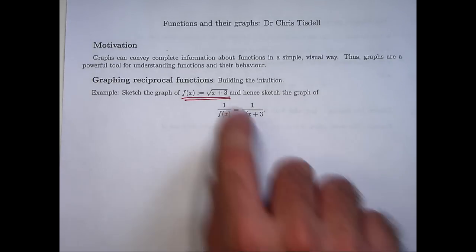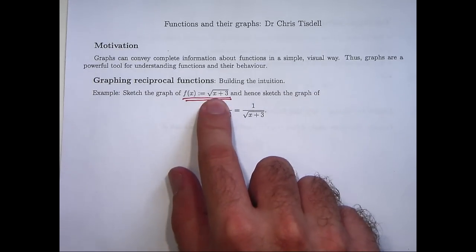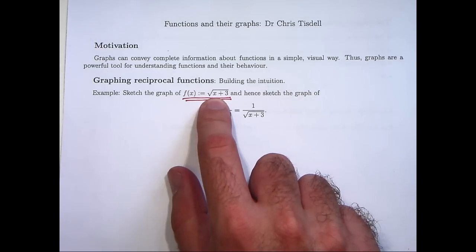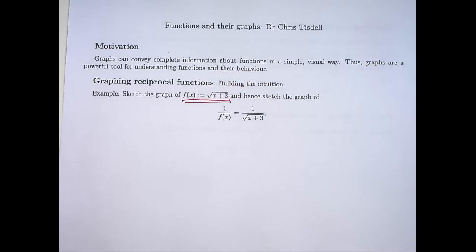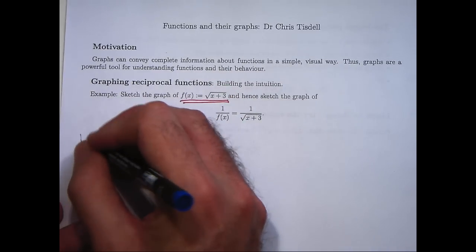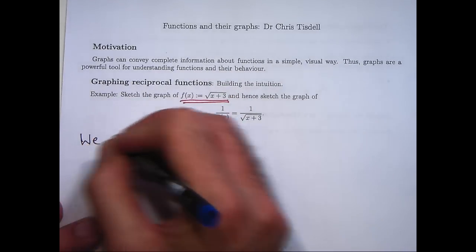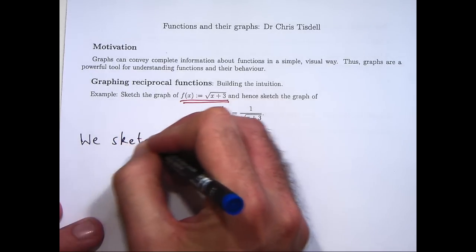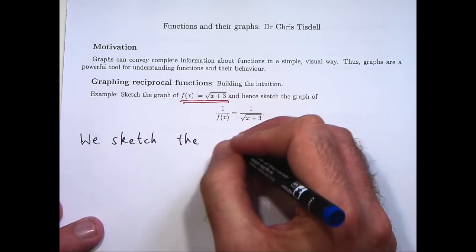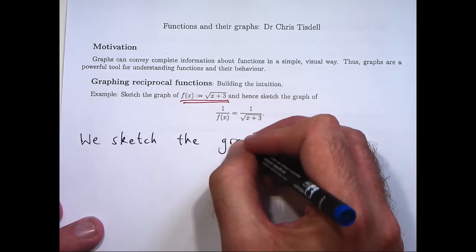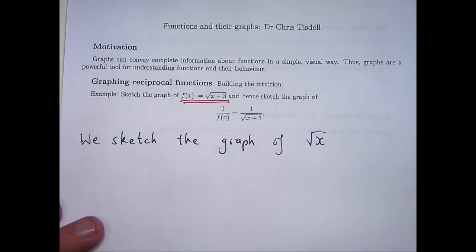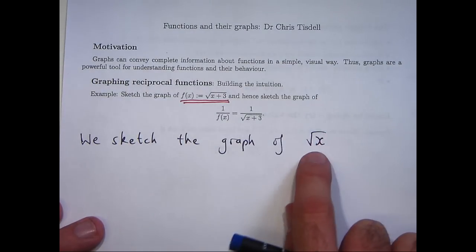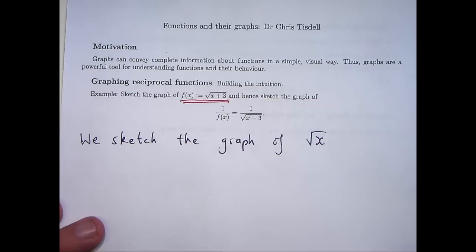So if you look at this function f, it's almost like the square root function — it's just got a plus 3 here. So what we're going to do is sketch the graph of root x, and shift that graph 3 units to the left.